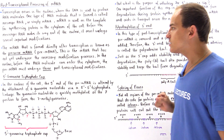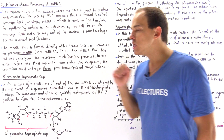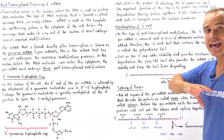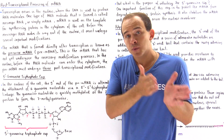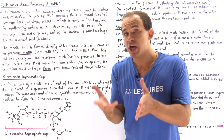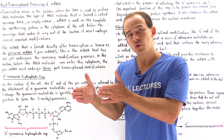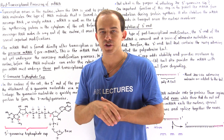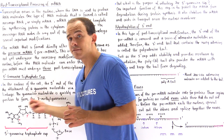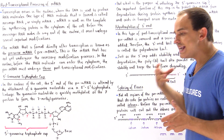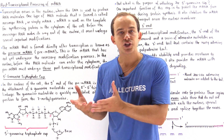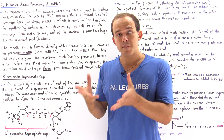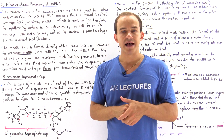Once all these processes take place — once we add the 5' cap, once we add the poly-adenosine tail, and once we splice together the exons and remove the introns — only then does our pre-mRNA become the mRNA molecule. Only then can the messenger RNA exit the nucleus into the cytoplasm and undergo protein synthesis, being used by the ribosomes to synthesize our proteins. The entire purpose of the 5' cap and poly-A tail is to give our mRNA the ability to resist degradation and travel from the nucleus into the cytoplasm.